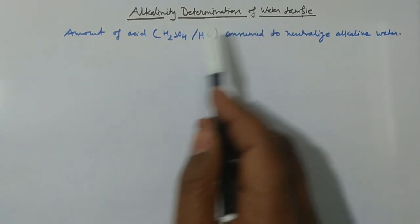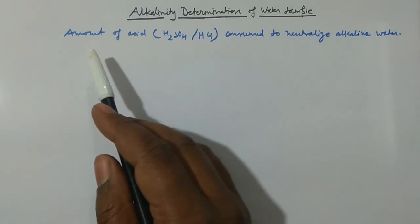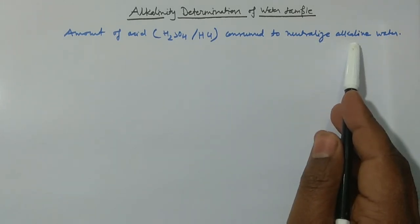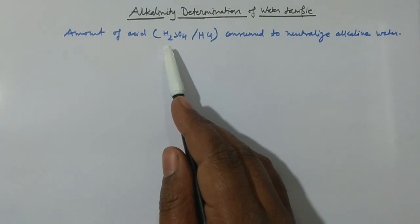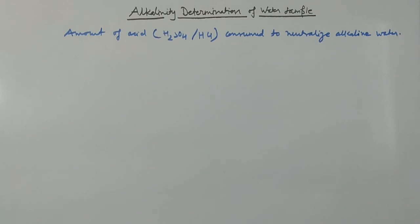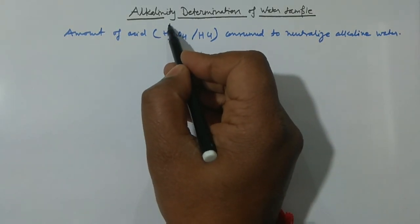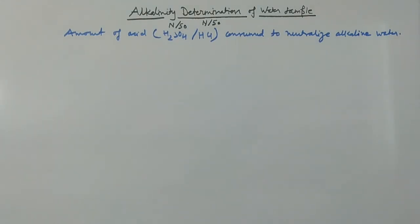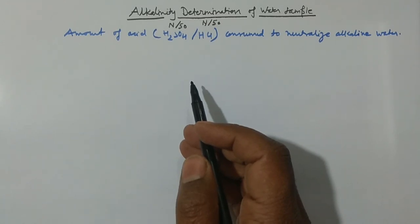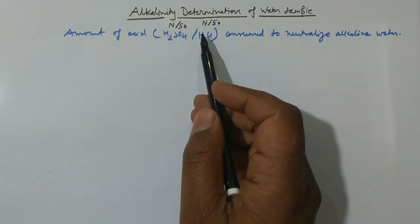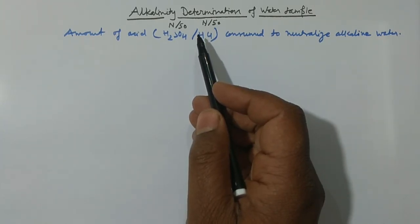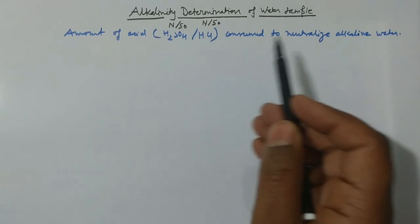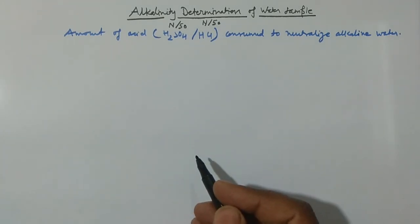First, let us define alkalinity. Alkalinity is the amount of acid consumed to neutralize the alkaline water. The acid used is either sulfuric acid (H₂SO₄) or hydrochloric acid (HCl). Since the amount of alkali present in natural water or industrial effluents is quite low, we generally use N/50 H₂SO₄ or N/50 HCl, meaning the normality is 1/50.